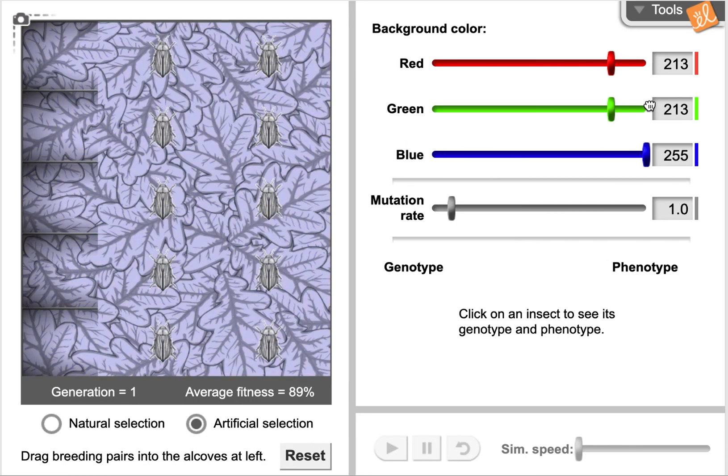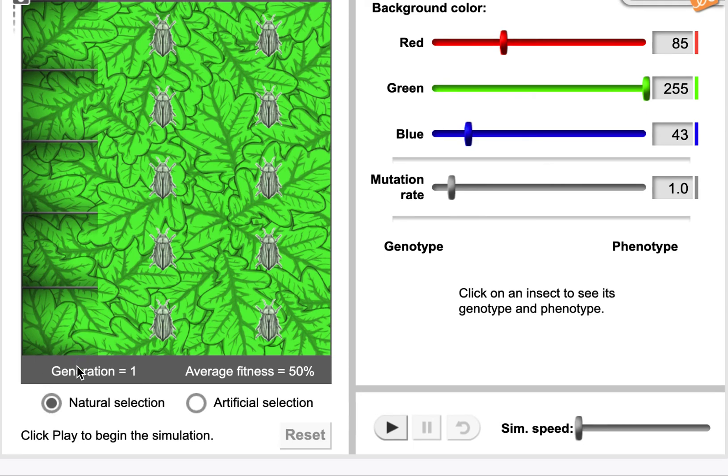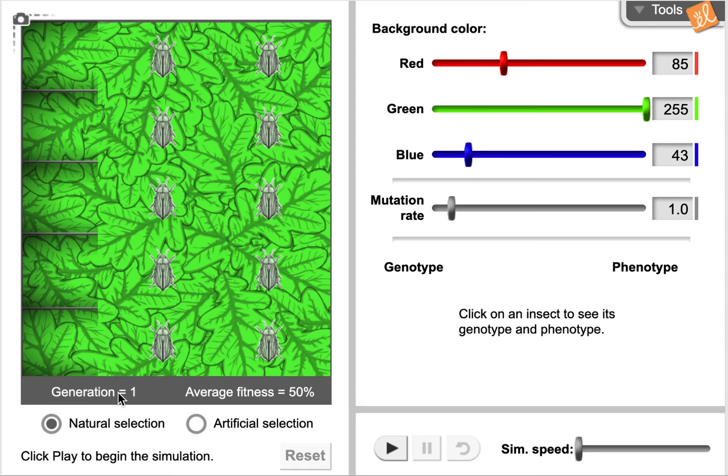We want to reset this entirely so I'm just going to reload the entire page. In the first activity we're going to make sure it's set to natural selection. Make sure that you have natural selection clicked. There's two things that we can see underneath the insects here. We can see the number of generations that have passed, how many times the insects have reproduced from grandparent to parent to child, and the average fitness. This is the average of how well adapted the insects are to their environment.